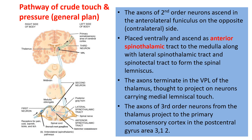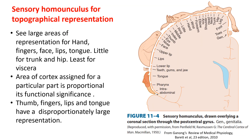After reaching the cortex, you can see the sensory homunculus, which shows the representation from different parts of the body in a topographical fashion. The hand, face, and tongue have a larger representation in the sensory homunculus, while the remaining parts have a lesser representation.